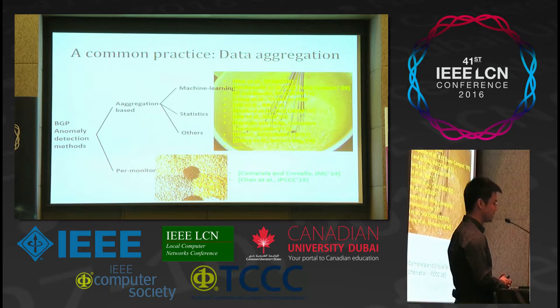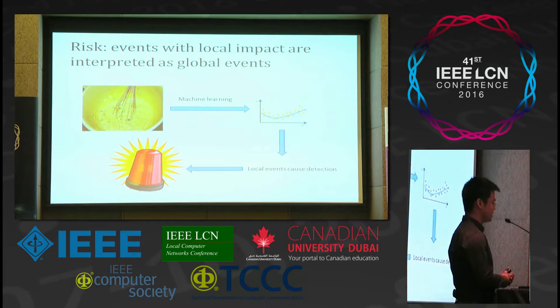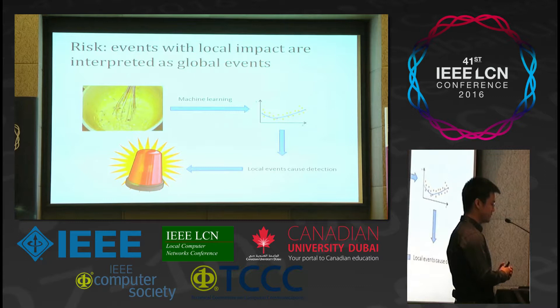For example, one can use models such as Tensor or Matrix to distinguish each monitor. There is a risk that events with local impact are interpreted as global events. A typical workflow is like this: one uses aggregated data as input into a machine learning model, and at a time point, a local event causes a detection in the model, and the model may send an alarm to the world.